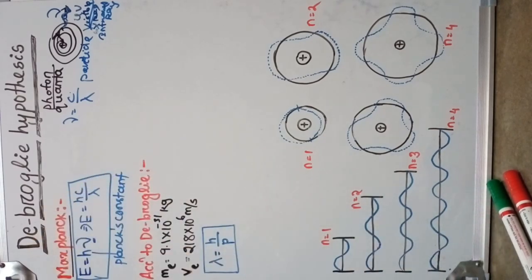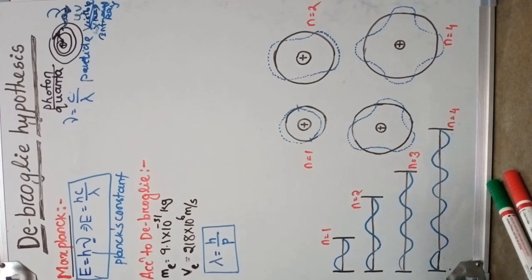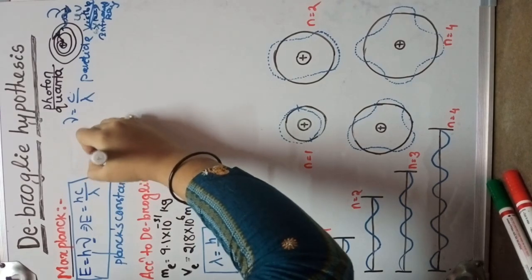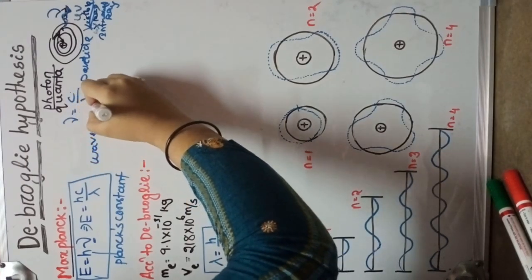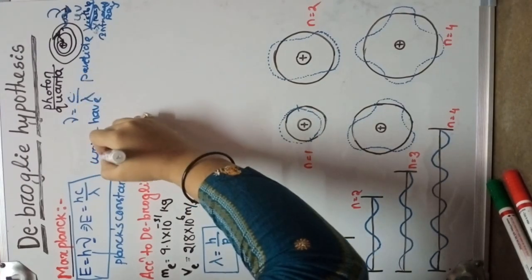Planck suggested that every wave has particle nature — every wave is made of small particles called photons or quanta. That means every wave has particle nature.